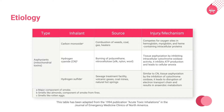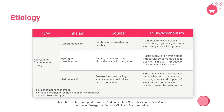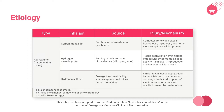Hydrogen cyanide causes tissue asphyxiation or cellular anoxia by inhibiting intracellular cytochrome oxidase activity and inhibiting ATP production. Hydrogen sulfide is a tissue asphyxiant that inhibits cytochrome oxidase and leads to disruption of the electron transport chain, which results in anaerobic metabolism.